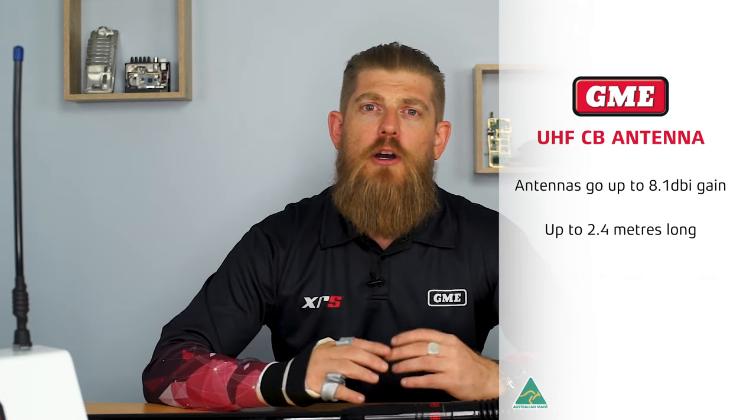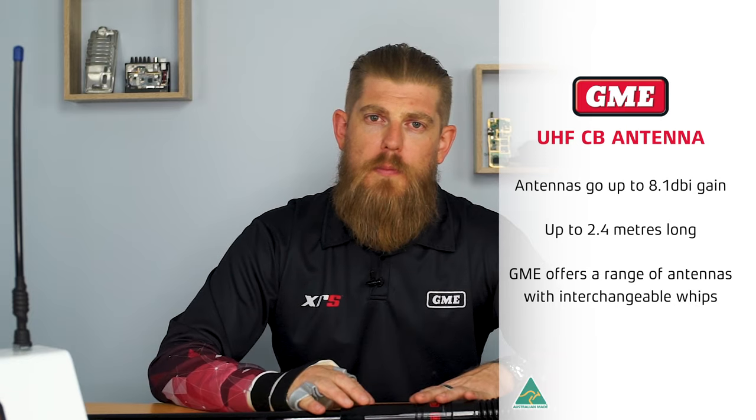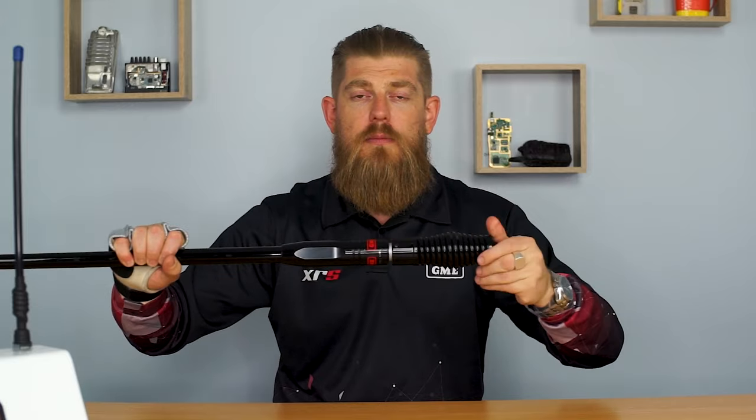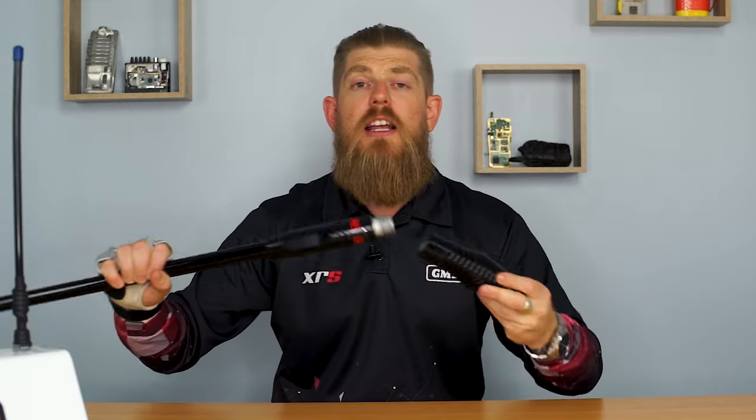This is why GME offers a range of antennas with interchangeable whips. On the 4700 series you can unscrew the base and spring from the whip and interchange the whips to suit the terrain you're travelling in. These bases will accept a 2.1, 6.6, or 8.1 dBi whip, enabling you to have the best performance for the terrain you're in. Of course some of you want the look of the big antennas on the front of the vehicle, but just remember that it won't always give you the best performance.